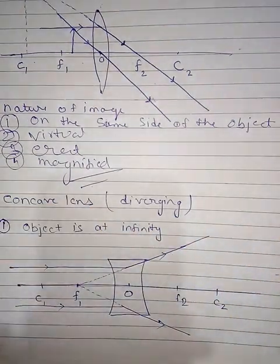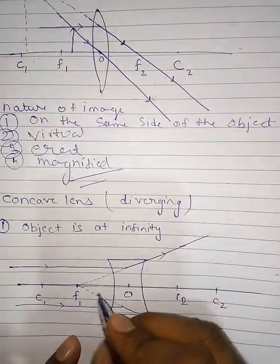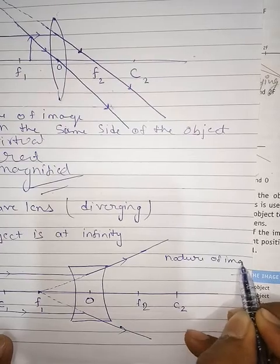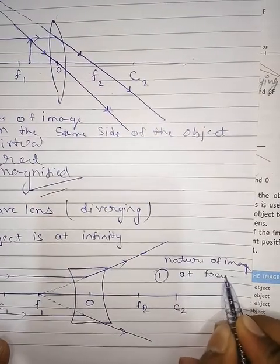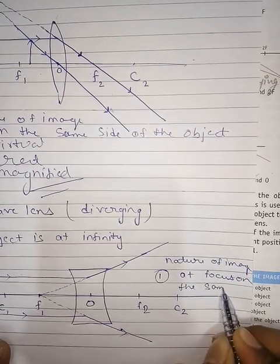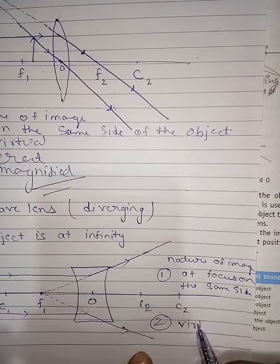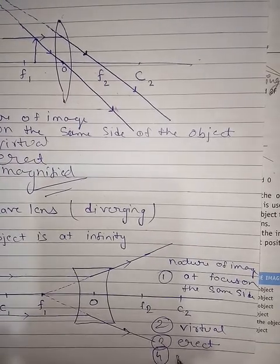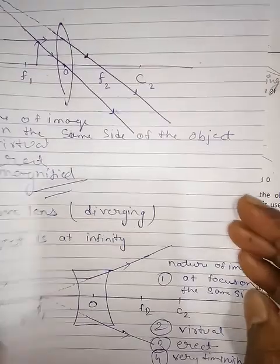दोनों light ray diverge करते चले गए, आगे जाके मिलेंगे नहीं। Diverge करने के बाद real world में meet नहीं करेंगे, virtually meet करेंगे — focus पर meet कर रहे हैं। Nature of image: image focus पर बनेगा on the same side। Virtual image form करेगा, erect होगा। Size very diminished होगा।